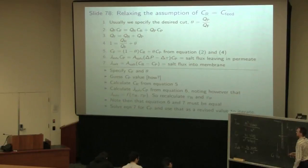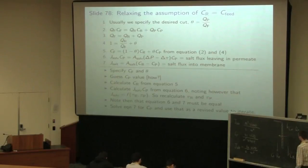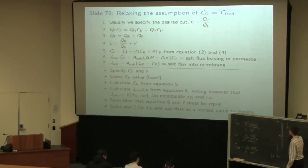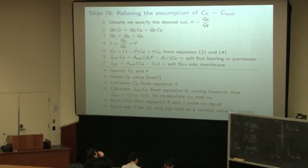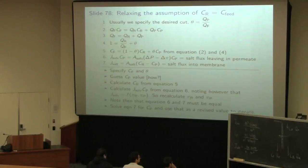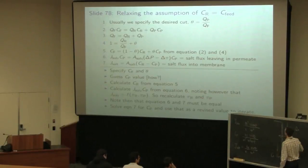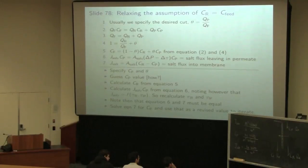We know that some of the salt or solute is in fact permeating through the membrane, so we need to relax this assumption that retentate concentration equals feed concentration. To do that, we solve a set of equations - multiple equations with multiple unknowns. The first equation is the cut definition: theta equals the permeate flow rate QP divided by the feed flow rate QF. Ideally that's around 40-60%, telling us what volume fraction of our feed is leaving in the permeate.